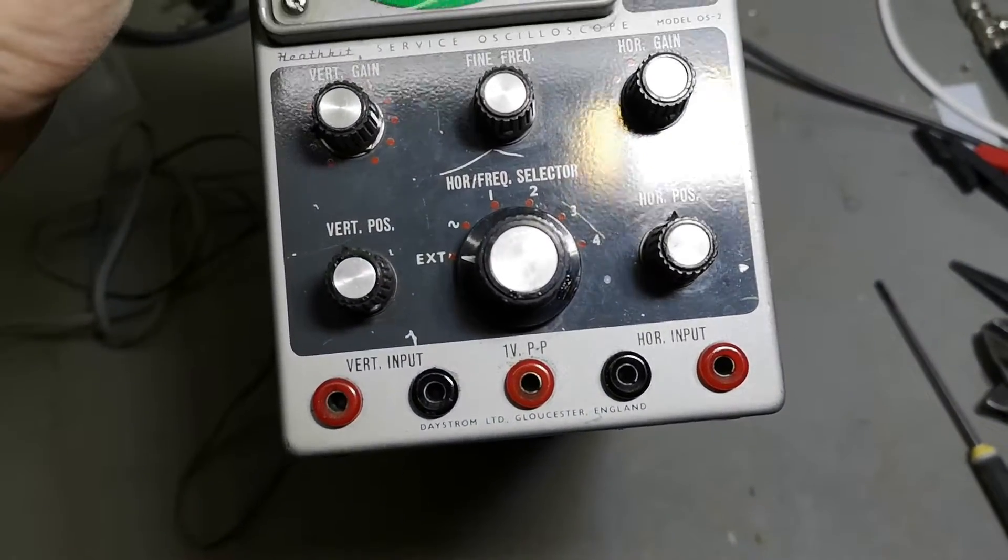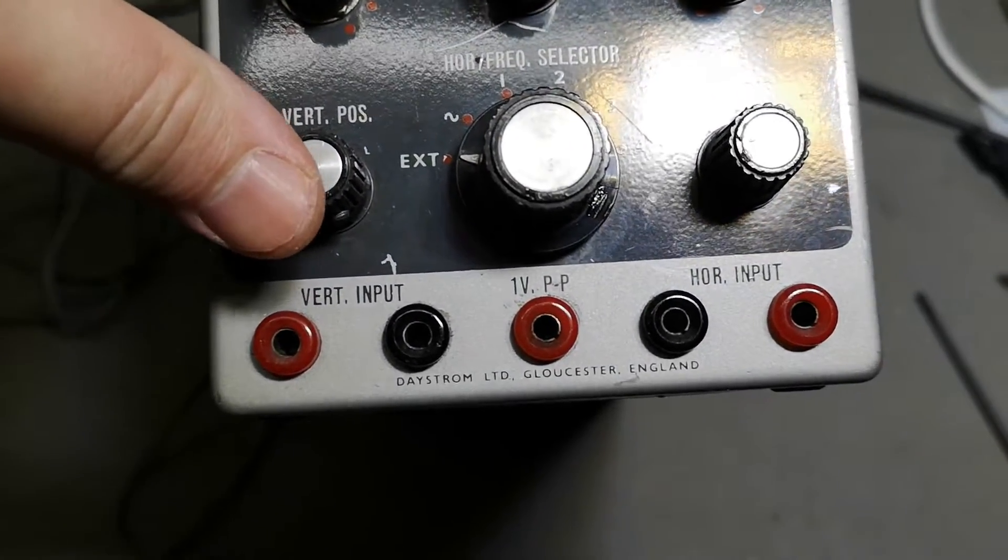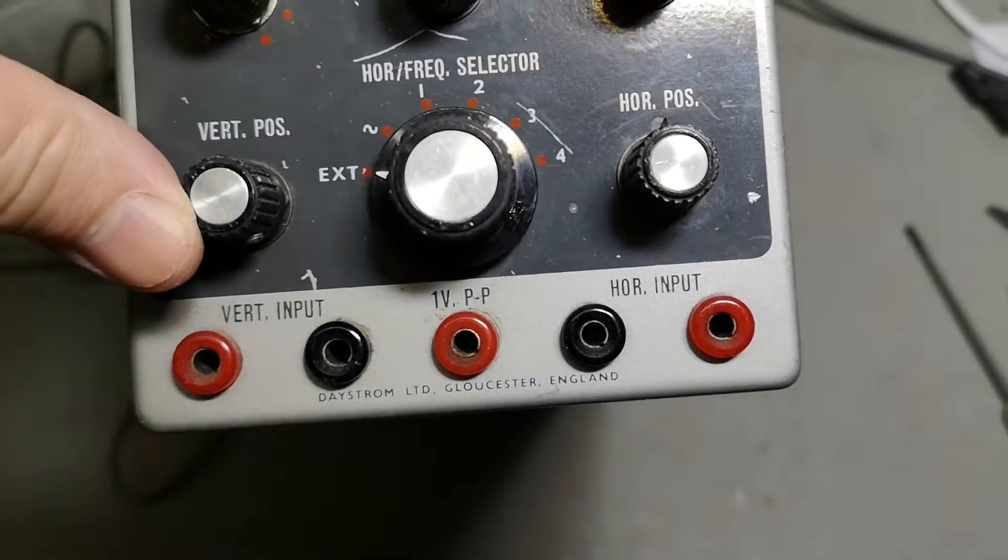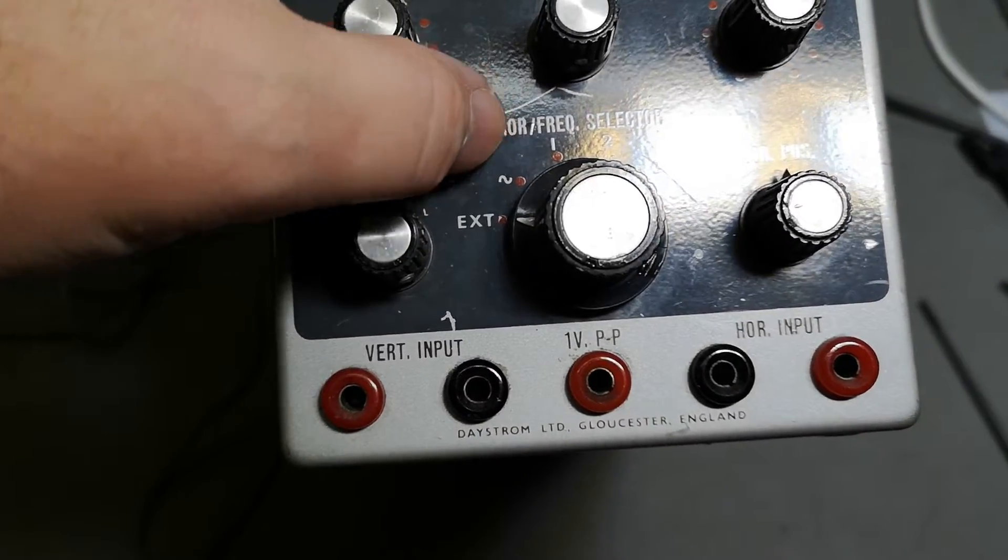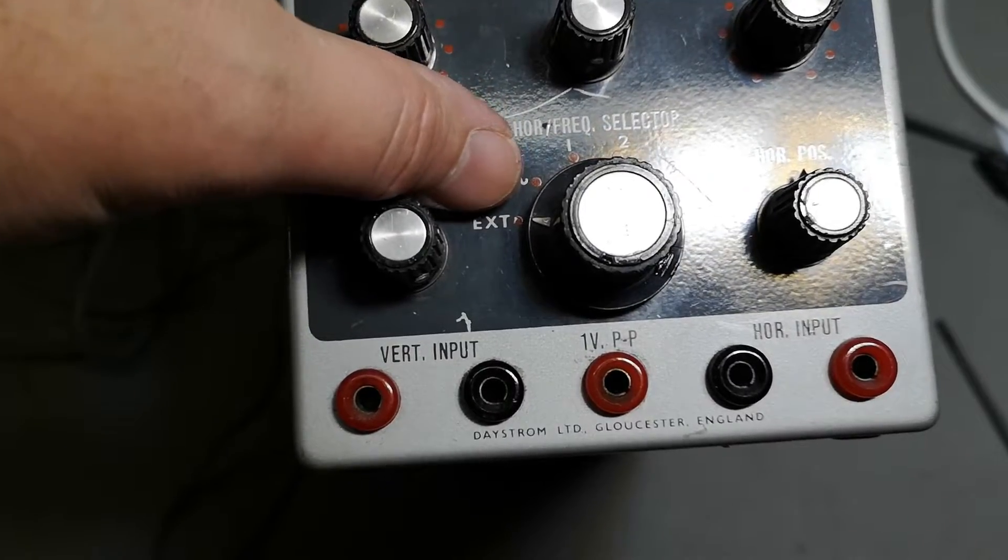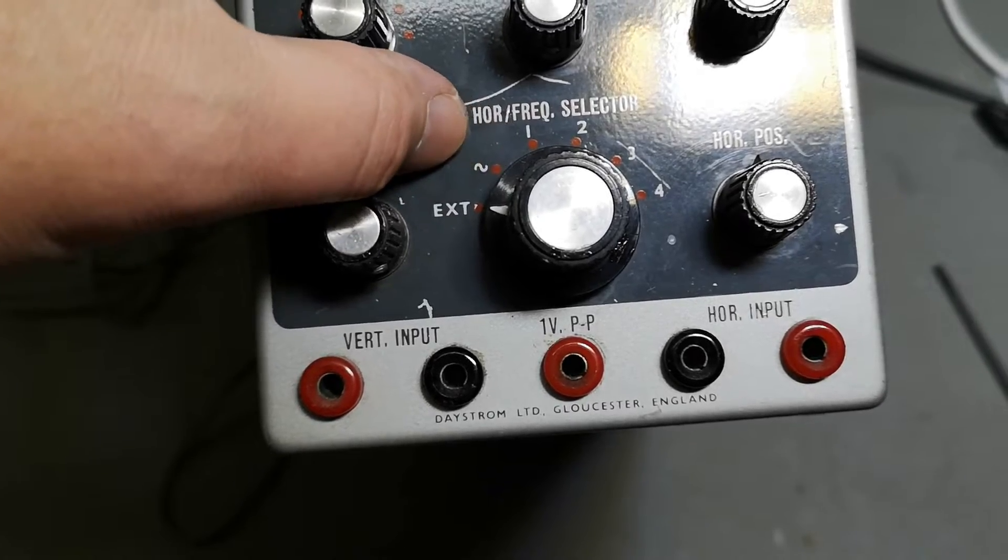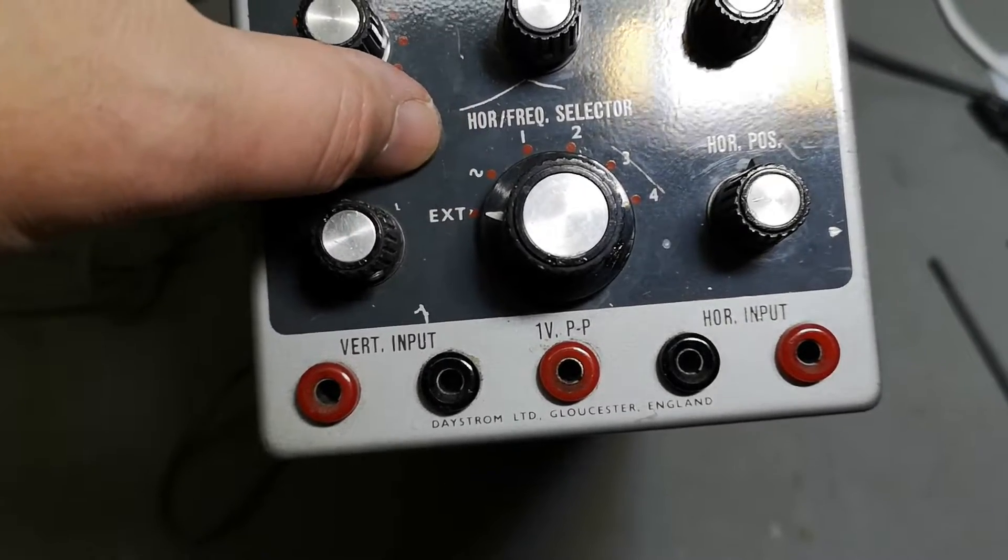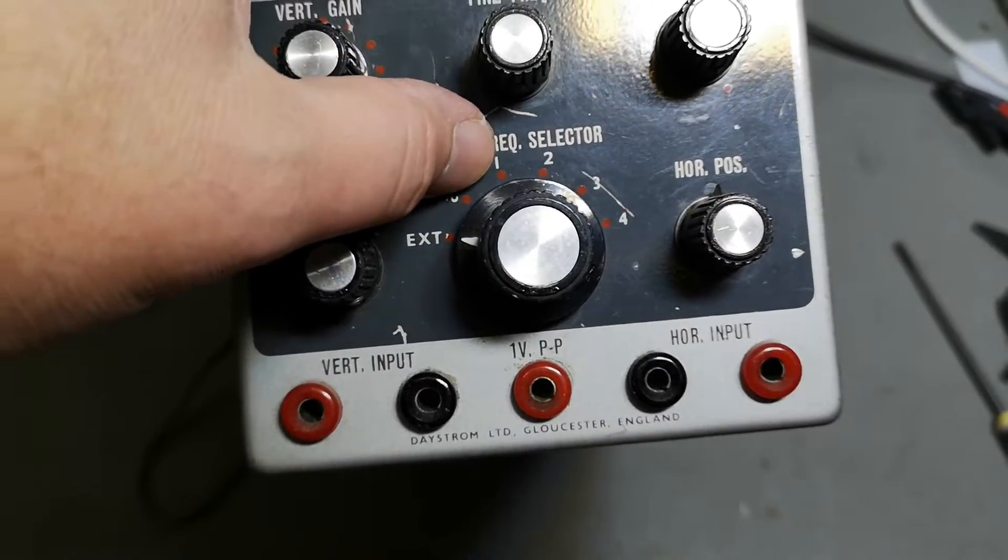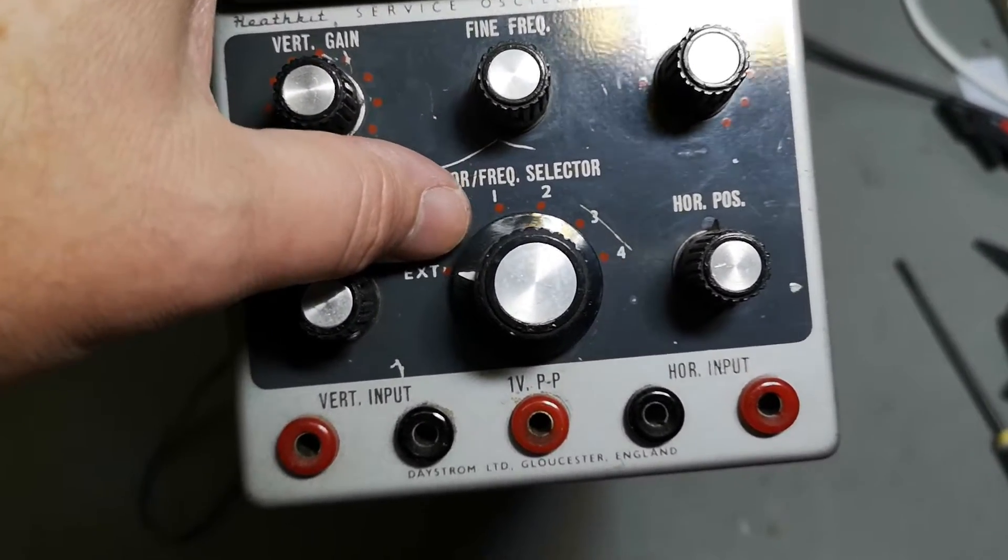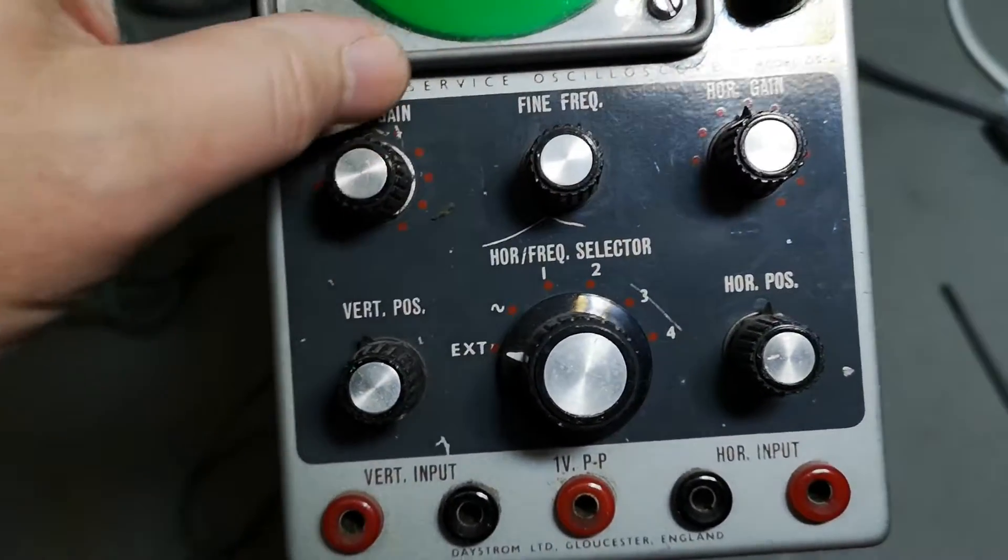It's got a few really odd features about the inputs, vertical and horizontal input. So I guess external, that will be horizontal input, right? Is this the mains input frequency? Probably. And then four different frequencies, whatever that is, one, two, three, four bananas, and then fine variable frequency.